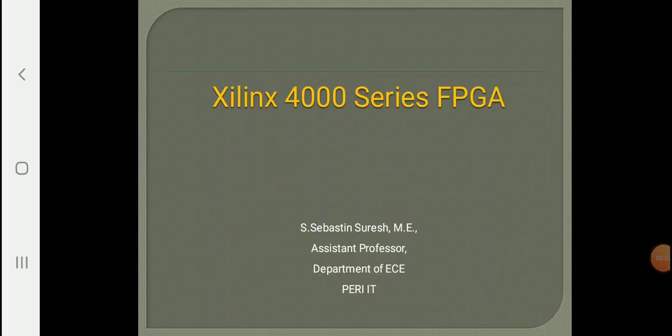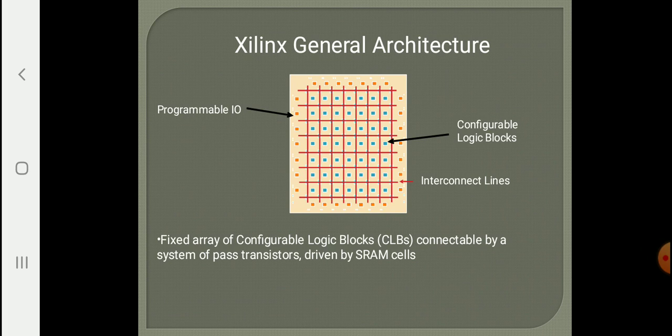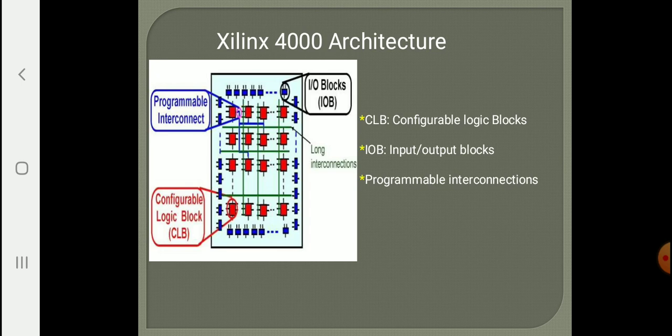Hello everyone, today we are going to see about Xilinx 4000 series FPGA. I am Sebastian Suresh, assistant professor, Department of ECE, Perry Institute of Technology. The general architecture of any FPGA will have three major blocks: one is configurable logic block, second one is programmable I/O blocks present at the periphery, and interconnect lines which run between the configurable logic blocks. Xilinx 4000 architecture follows this basic FPGA architecture with the same three major blocks: CLB, I/O block, and programmable interconnection.